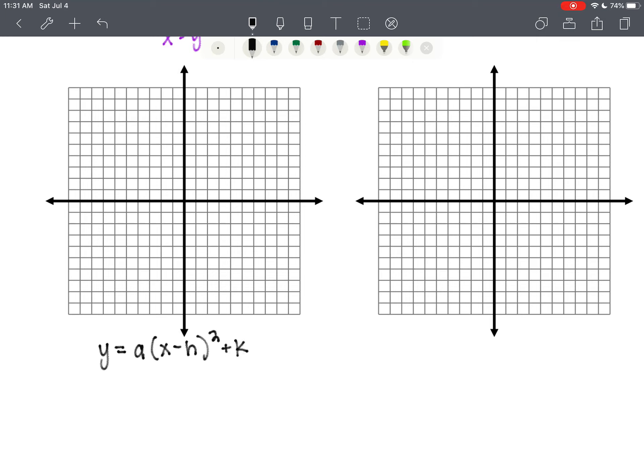Where (h, k) is our vertex. The sign that goes with k definitely is the sign that k is.